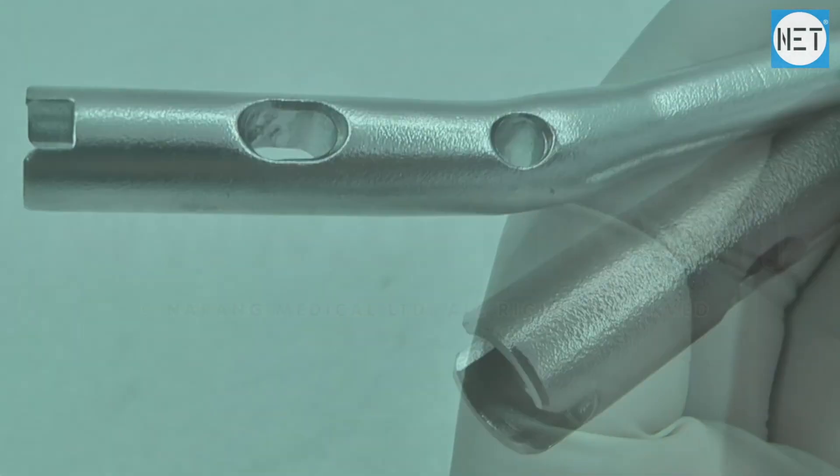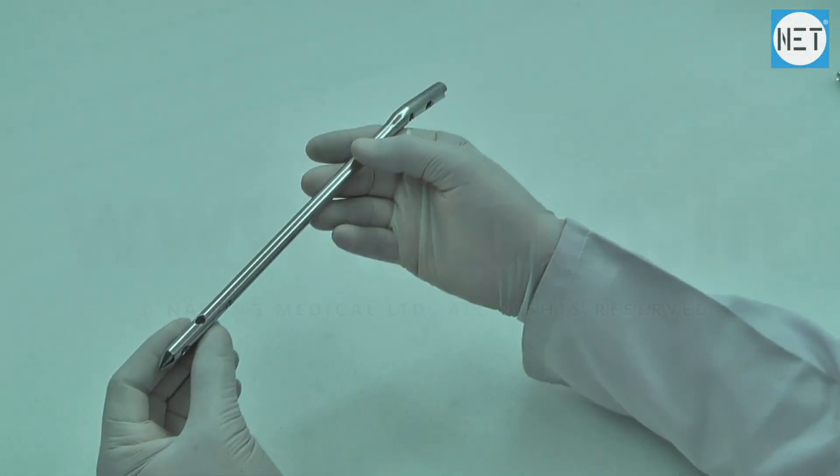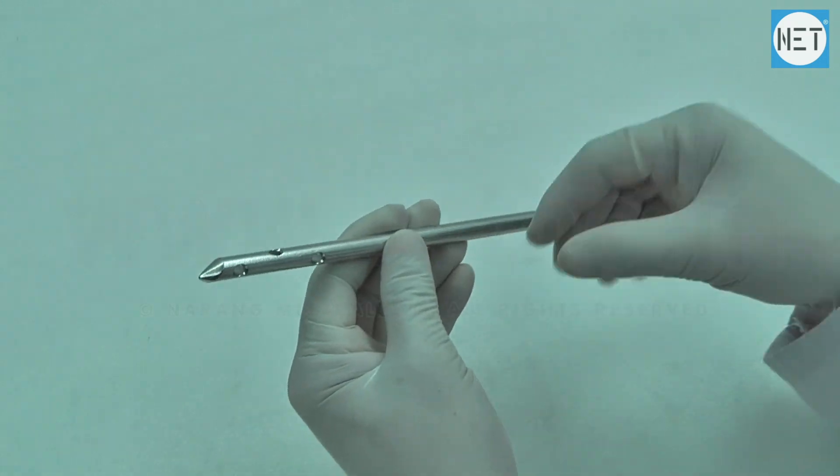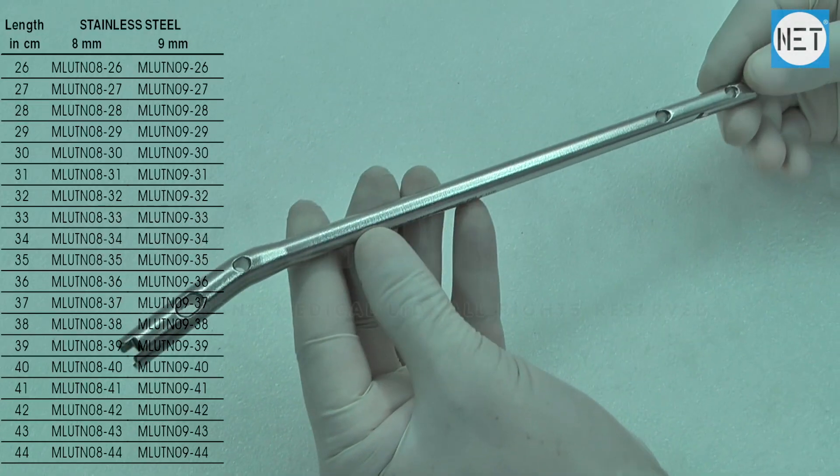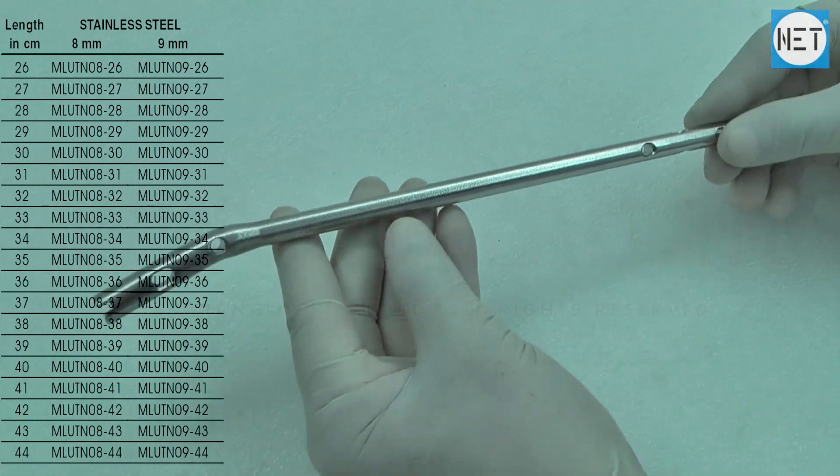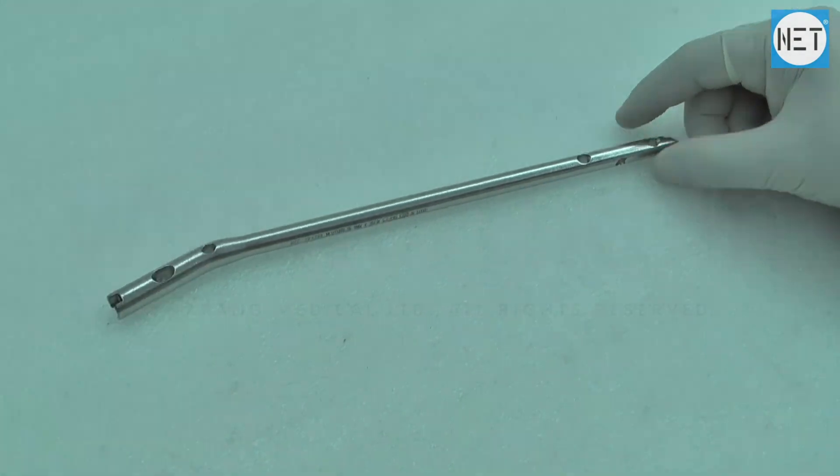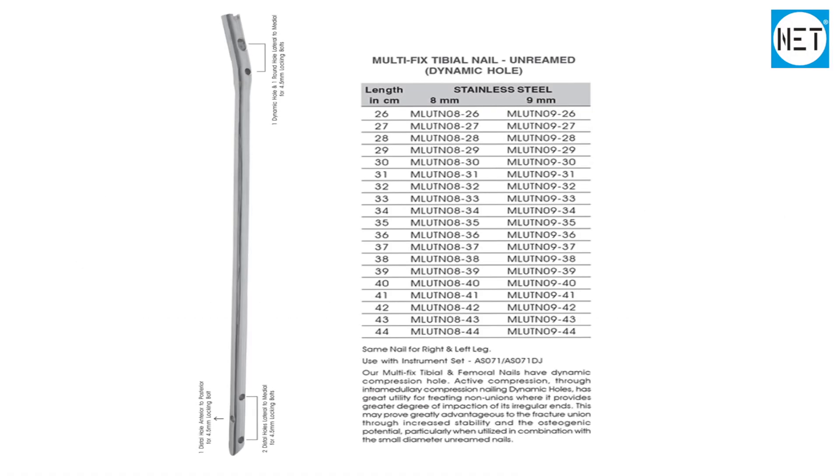These nails are used with instrument sets AS071 and AS071 DJ. Multi-fix tibial nails un-ringed are available in 8mm and 9mm diameter and in lengths varying from 26 to 54 cm. These are available in stainless steel and titanium.